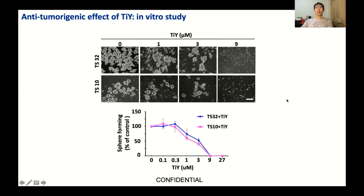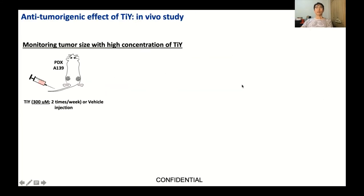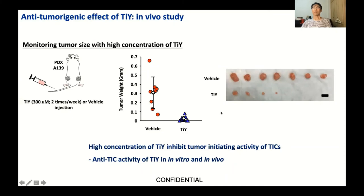As anticipated, selective inhibition of TiY on the TIC line resulted in the inhibition of sphere formation in a dose-dependent manner, with complete inhibition shown at high concentrations. Next, to confirm the therapeutic effect of TiY in an animal model, tumor-induced mice were given a high concentration of TiY through tail vein injection. When monitored over one month, TiY clearly inhibited tumor growth, demonstrating anti-TIC activity of TiY both in vitro and in vivo.